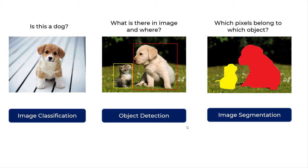To summarize: when you classify the entire image as one of the classes, it is called image classification. When you detect objects within an image with rectangular bounding boxes, it is called object detection. When you classify each pixel as one of the classes, it is called image segmentation.